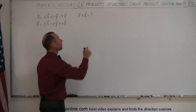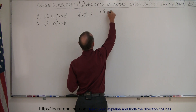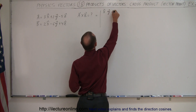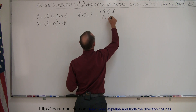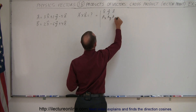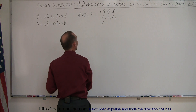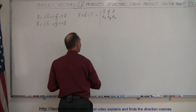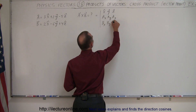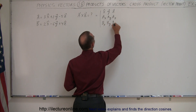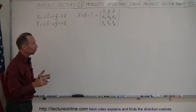We know that the cross product of two vectors is equal to a determinant using the unit vectors X, Y, and Z in the first row, the X, Y, and Z components of the first vector in the second row, and B sub X, B sub Y, B sub Z — the components of the second vector — in the third row. Then we find the solution of that determinant.